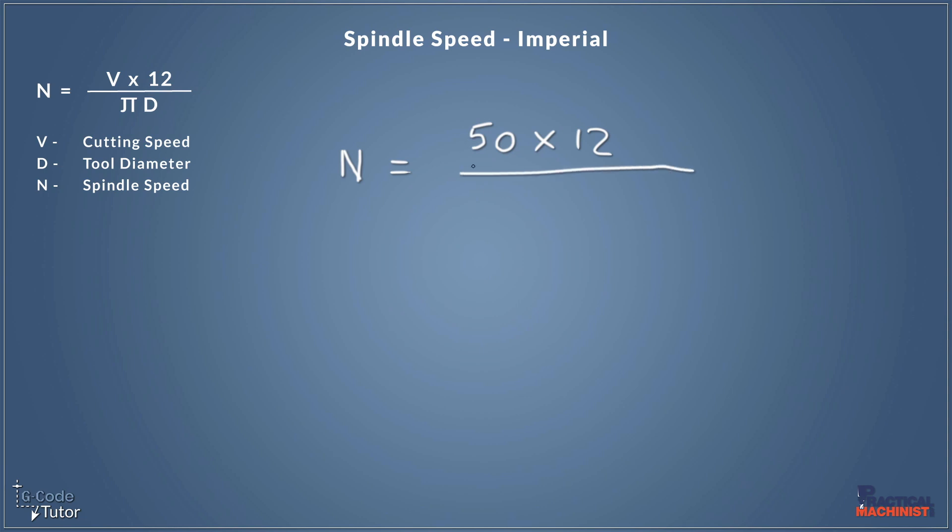Now, the bottom part, we would divide that by pi D. So we're taking pi as 3.14, and that would be times by the diameter of our tool. So in this instance, let's say our tool is half an inch. So we would put 0.5, because we're working in imperial, so it would be half an inch designated like that. So there's our equation.